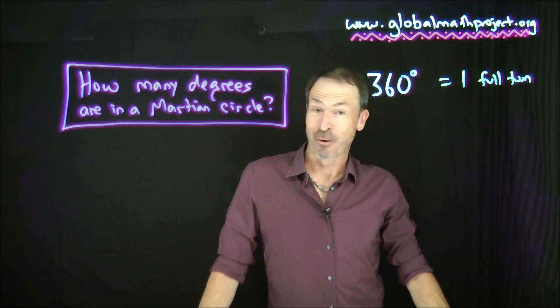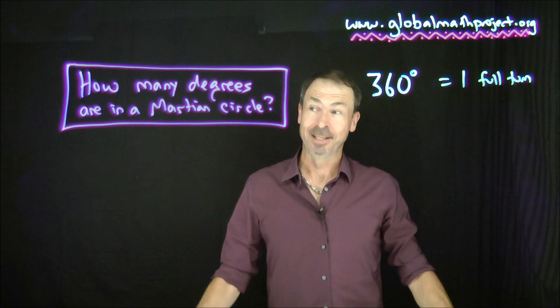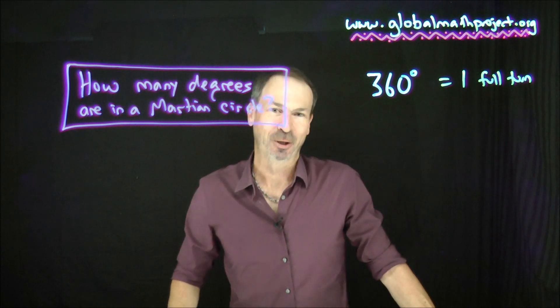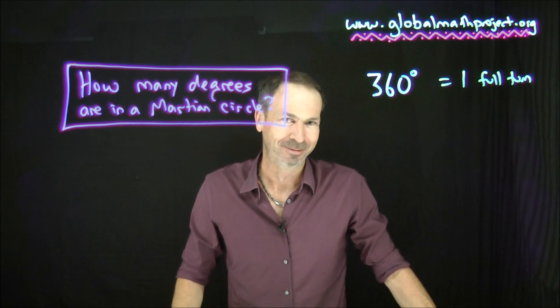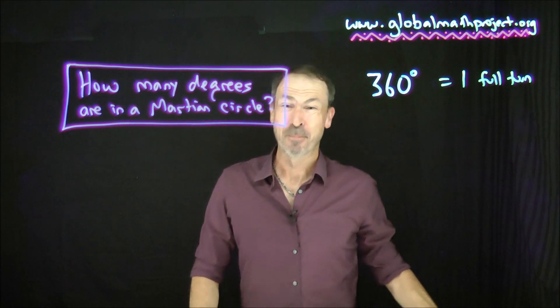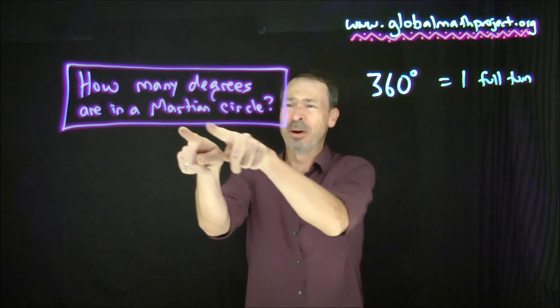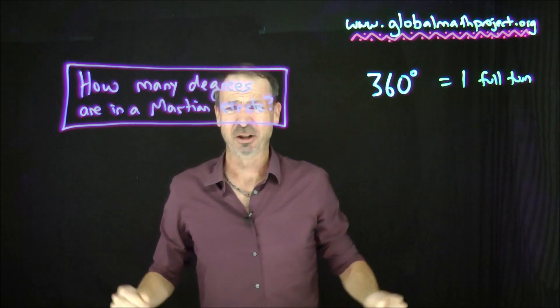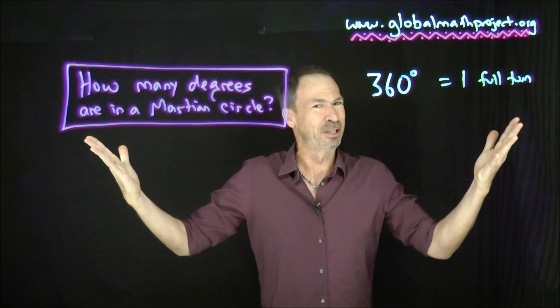Okay, let's start today with a very strange question. And the question is this one: How many degrees are in a Martian circle? Did I say strange? That's a very peculiar question. What could it possibly mean? What am I talking about? What is a Martian circle? Isn't that just a circle? What's this question really about?